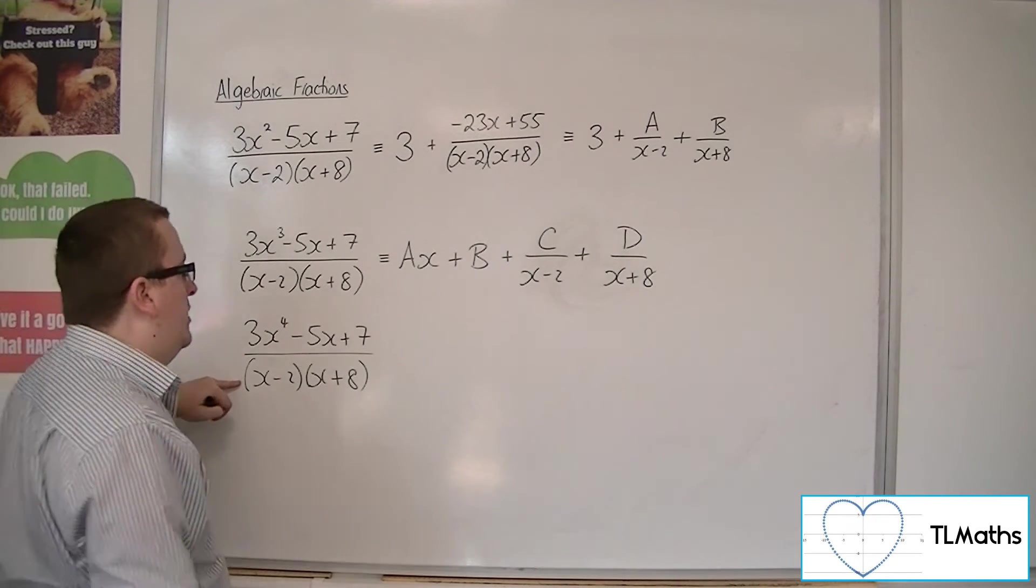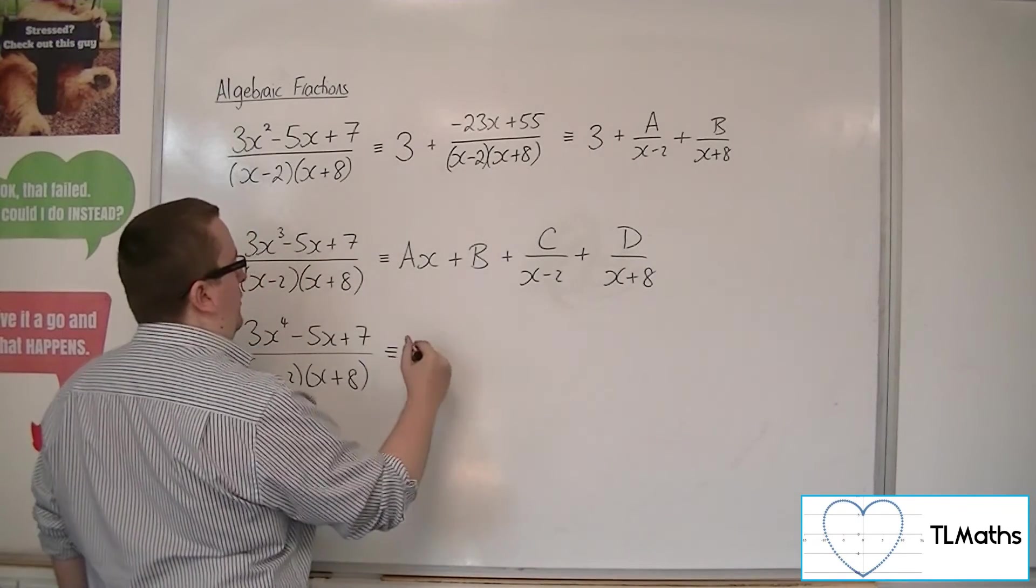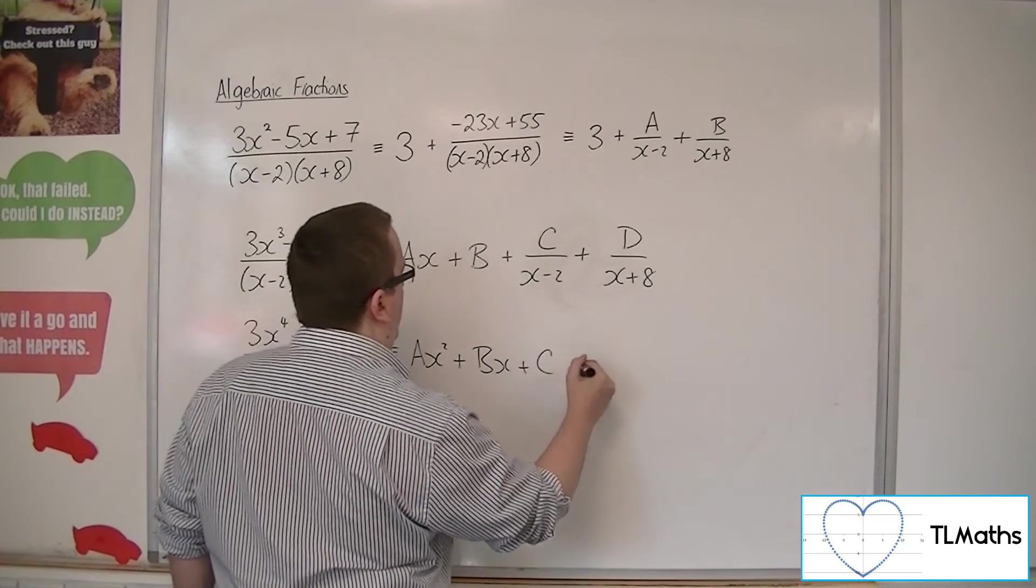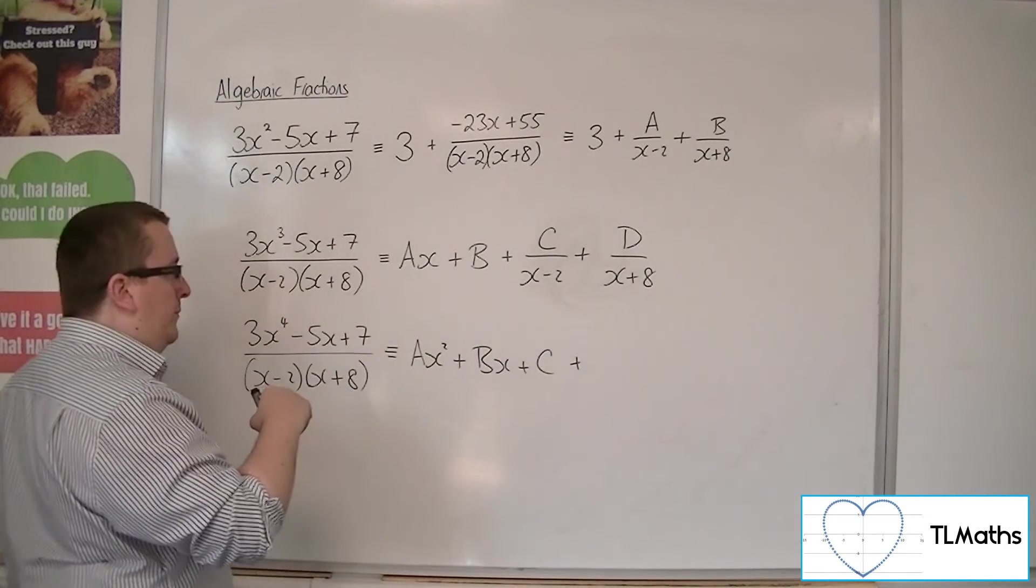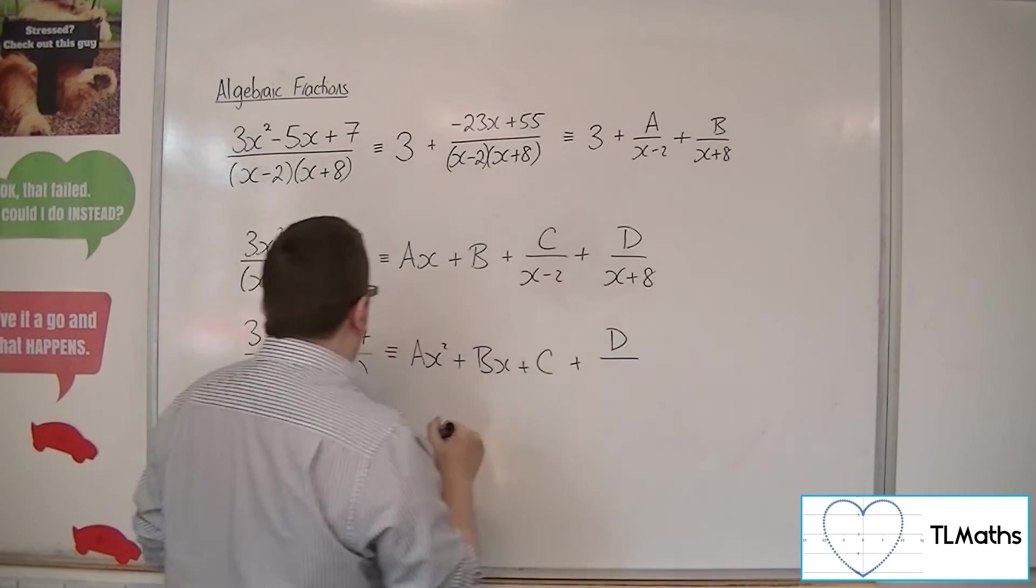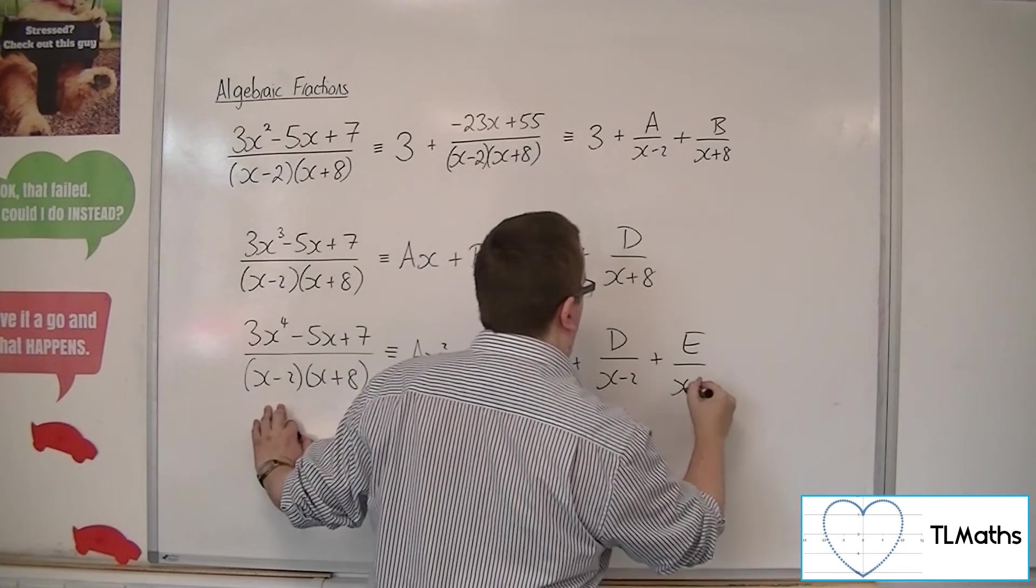So when I do a quartic divided by a quadratic, I will get a quadratic term plus partial fractions. So I'll get ax squared plus bx plus c plus d over x minus 2 plus e over x plus 8.